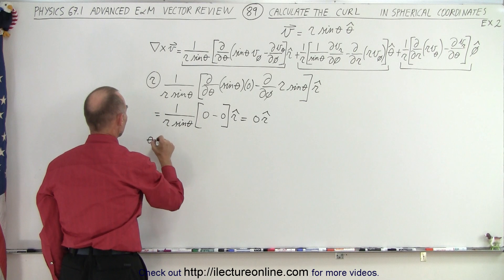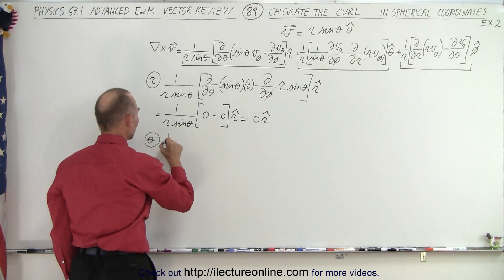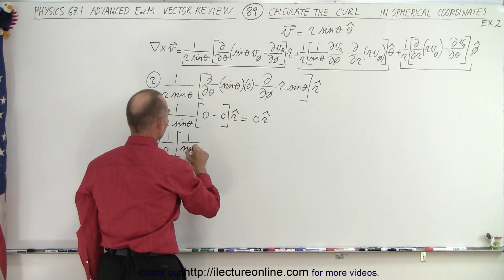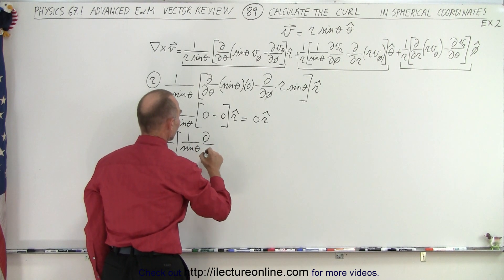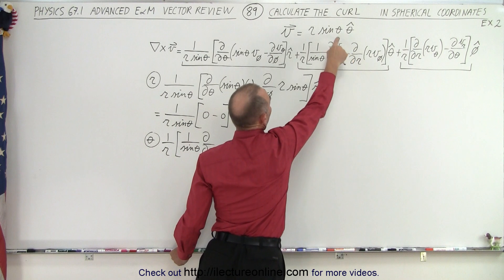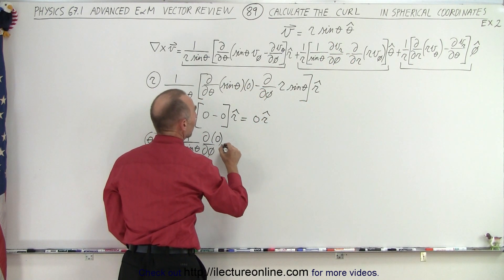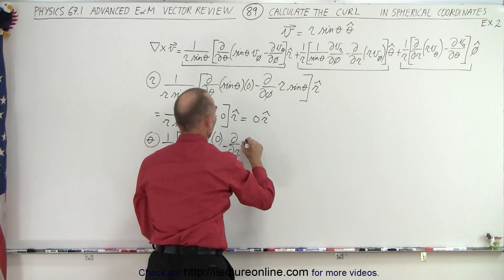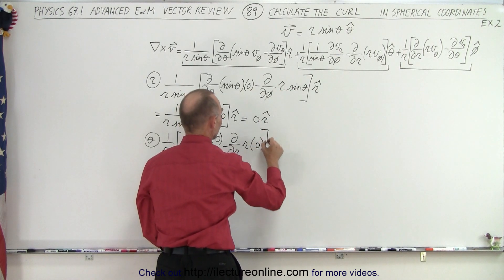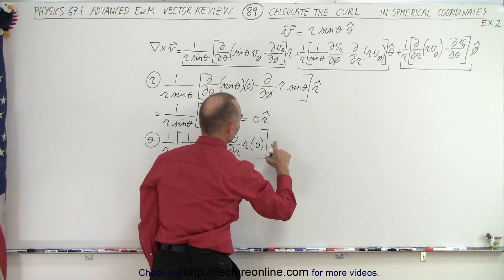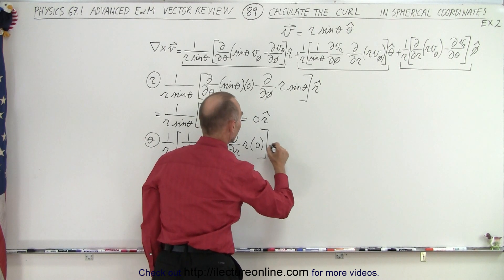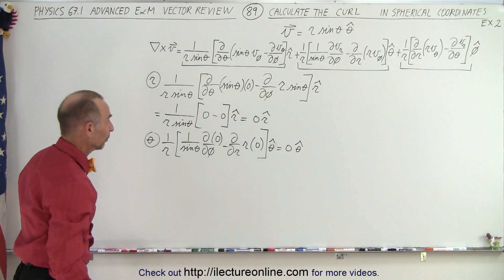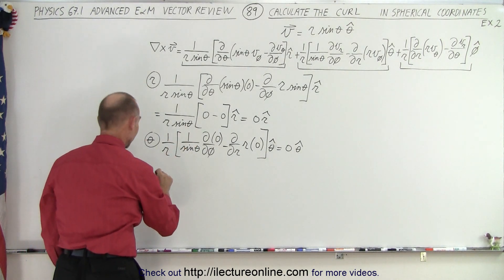Let's try the next one, which is the theta component. We have 1 over R times 1 over sine of theta times the partial derivative with respect to phi of the R component of the vector — but there's no R component, so that's 0. Minus the partial derivative with respect to R of the phi component — but there's no phi component, so that's 0 as well. So the theta component equals 0. So far we're getting 0, but the third component should give us something.